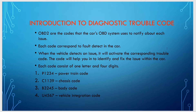Each code consists of one letter and four digits. As shown in the examples, codes cover the powertrain, chassis, and body control modules. If the code starts with P — like P1234 — the fault is associated with the powertrain control part. If it starts with C, it is a chassis code. If it starts with B — like B325 — it is a body code. If it starts with U — like U4567 — it is a vehicle integration code.